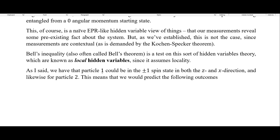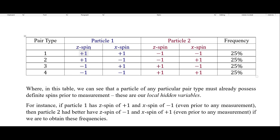We have particle one in the plus or minus one spin state in the z and x direction, and likewise for particle two. This means we can predict the following outcomes, assuming local hidden variables. So particle one, before any measurement, is definitely in the plus one z-spin and plus one x-spin. That must mean that particle two is in the minus one z-spin and minus one x-spin. Each combination should have a frequency of 25 percent. So in this table we can see that a particle of any particular pair type must already possess definite spins prior to measurement — these are our local hidden variables. And I'll keep stressing the local part here, because this is really what Bell's theorem is about.